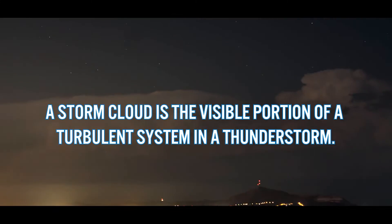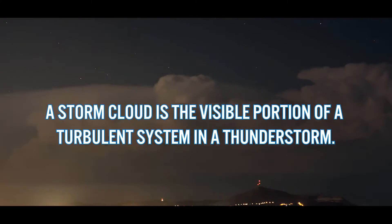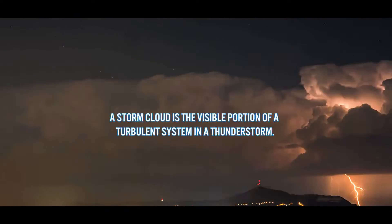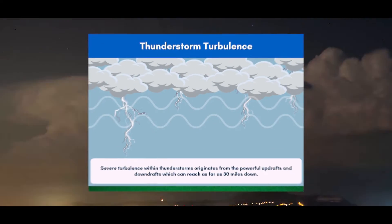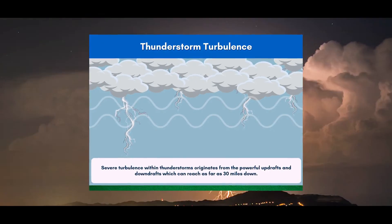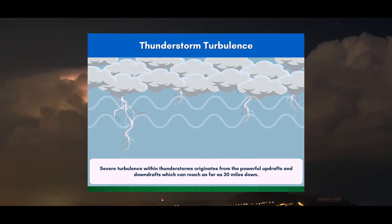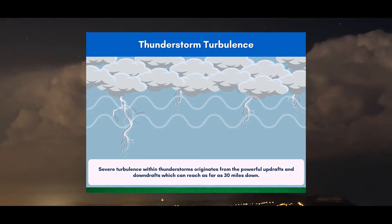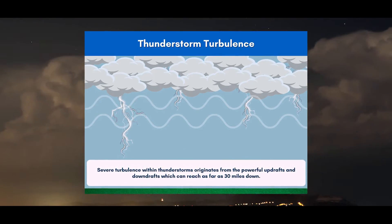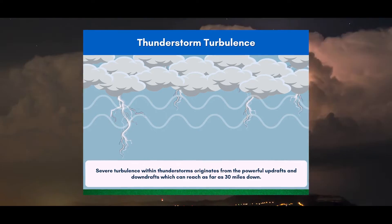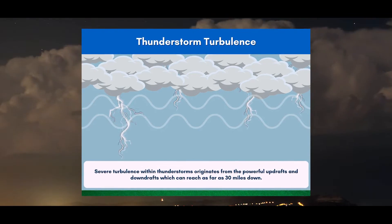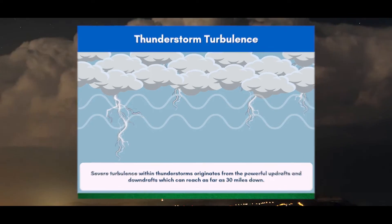A storm cloud is the visible portion of a turbulent system in a thunderstorm. Updrafts and downdrafts often extend outside the storm, with severe turbulence extending as much as 15 or 30 miles.